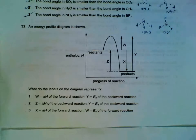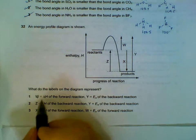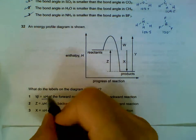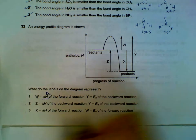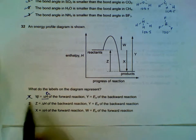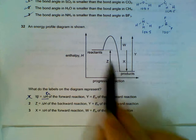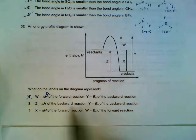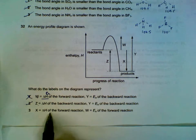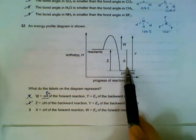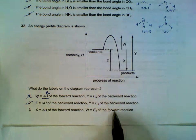Question 32: energy profile diagram. Statement 1 says W is the change in energy for the forward reaction, but W is actually the activation energy, so statement 1 is wrong. That means statements 2 and 3 must be correct. Z is the change in energy for the backward reaction. Y is the activation energy — correct. X is the change in energy for the forward reaction, and W is the activation energy of the forward reaction.